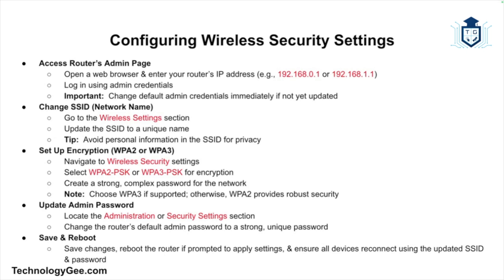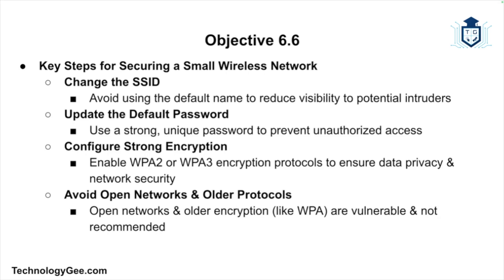Next, go to the wireless security section and select either WPA2-PSK or WPA3-PSK for encryption, and create a strong complex password. If your devices support WPA3, select it for better protection; if not, WPA2 is still secure for most small networks. Then in the Administration or Security section, change the router's default admin password to something strong and unique. Save your settings and reboot the router, then ensure all devices reconnect using the new SSID and password.